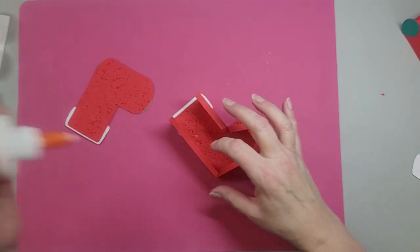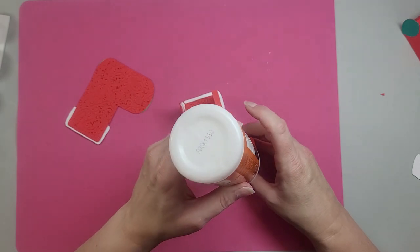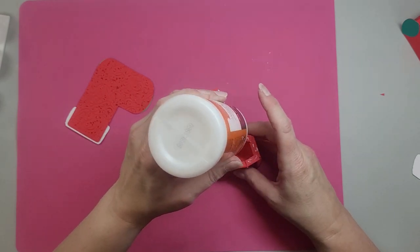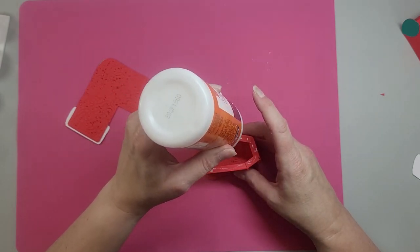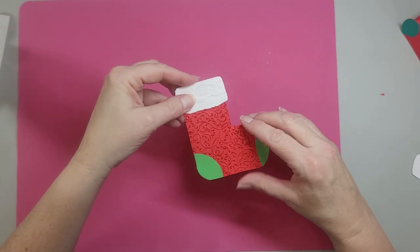All right. Now for this side, we're going to start with glue here. Put glue all the way around. You're going to lay this on top.